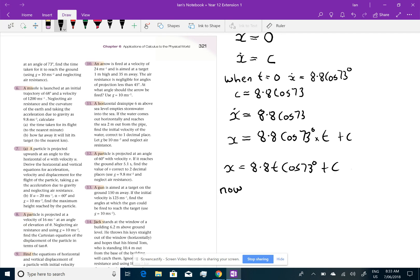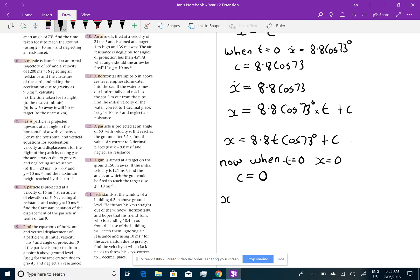Now, when t equals 0, the horizontal displacement is also 0. So, again, my second constant will be 0. All right. So, there's my displacement. x equals 8.8 t cos 73 degrees.